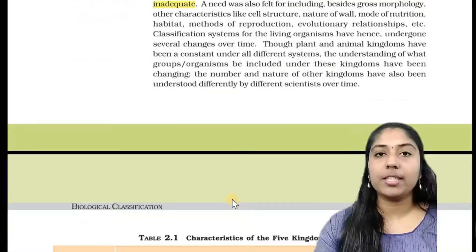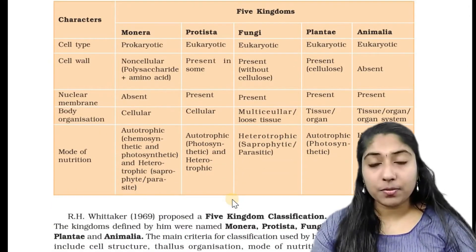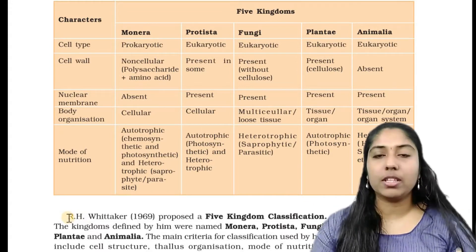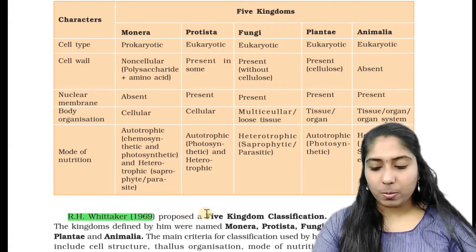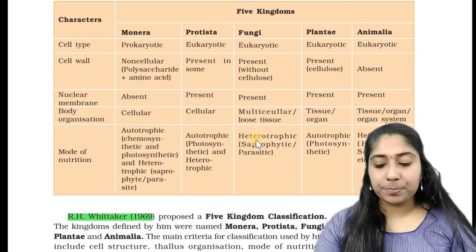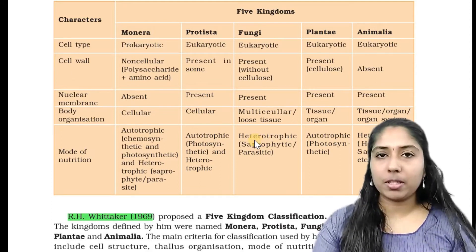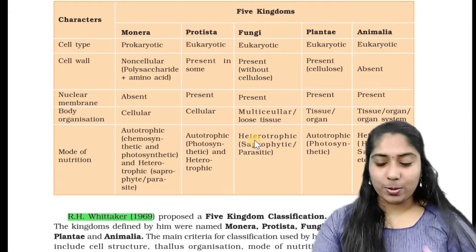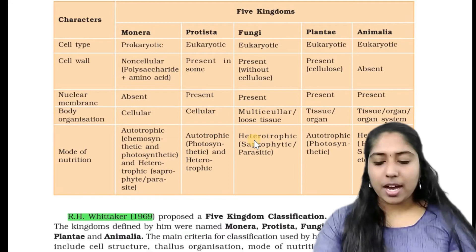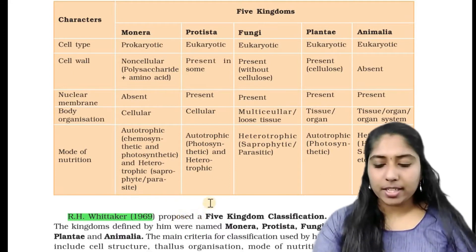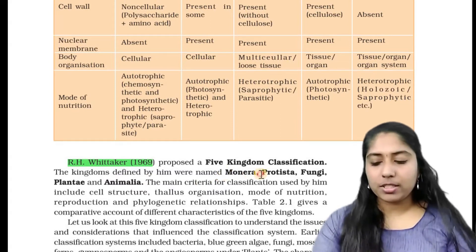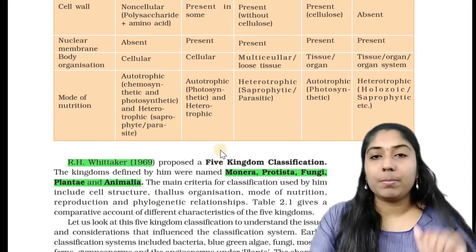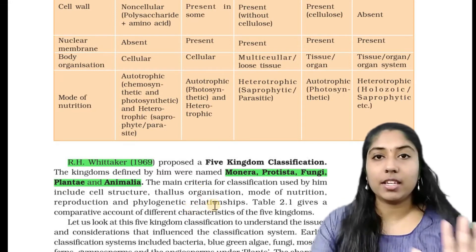Robert H. Whittaker proposed a five kingdom classification in 1969 — that is an entrance exam question. R.H. Whittaker, 1969, proposed a five kingdom classification. The kingdoms defined by him were Monera, Protista, Fungi, Plantae, and Animalia. You have to remember that the five kingdom classification came from R.H. Whittaker in 1969.